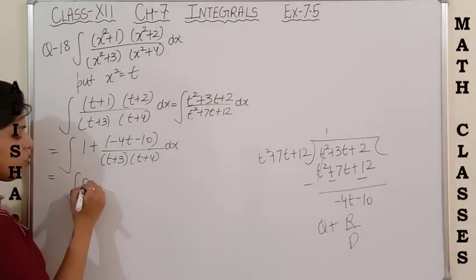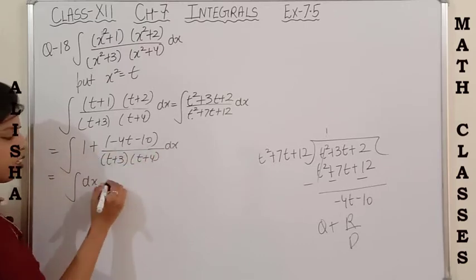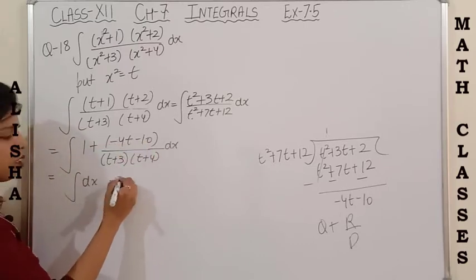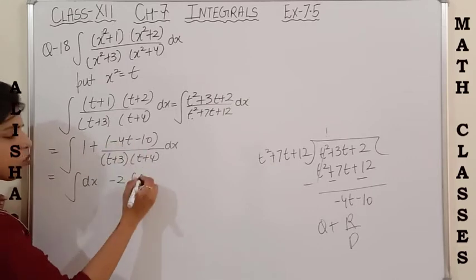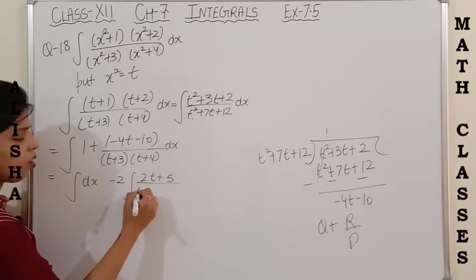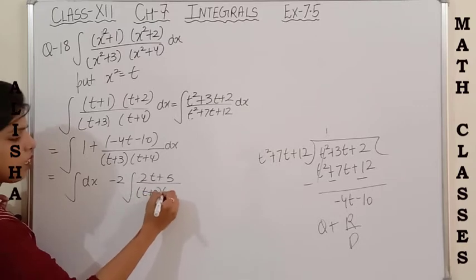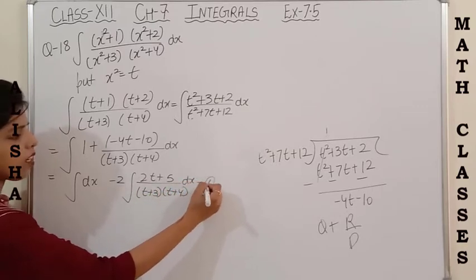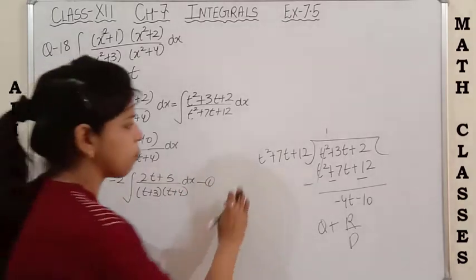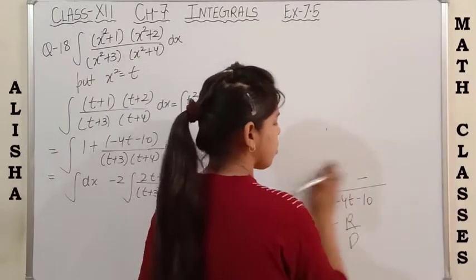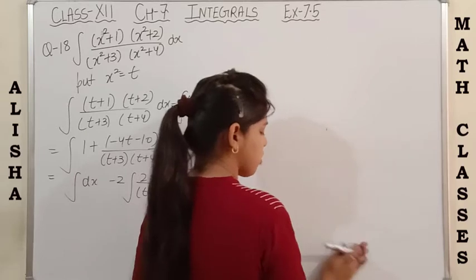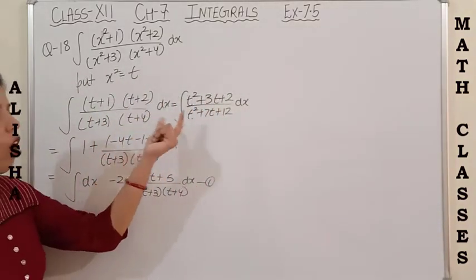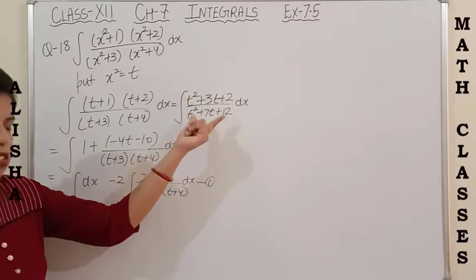Now split this integral into two parts. One part is the integral of 1 dx, and from the remaining two terms you can take −2 common, giving −2 times the integral of (2t+5) upon (t+3)(t+4) dx. Mark this as equation 1. You have to do long division whenever the degree of numerator and denominator are the same, or whenever the degree of the numerator is greater than the denominator.